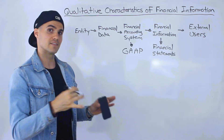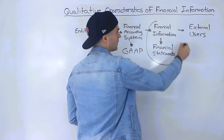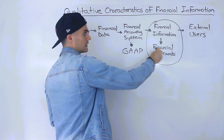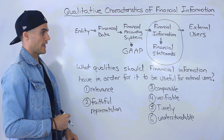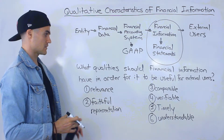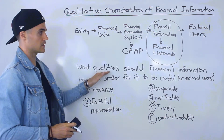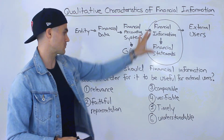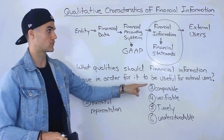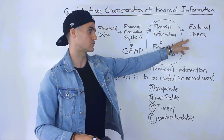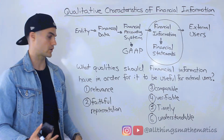What we're going to be doing in this video is going a little bit more deep into the financial information part. More specifically, the question we're going to answer is: what qualities should this financial information have in order for it to be useful for external users? There are actually six qualities that we're going to go through.